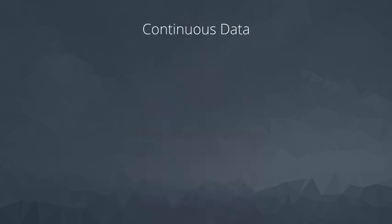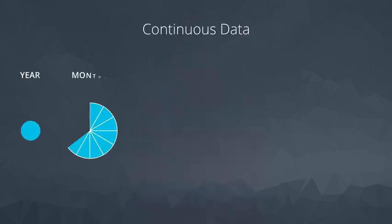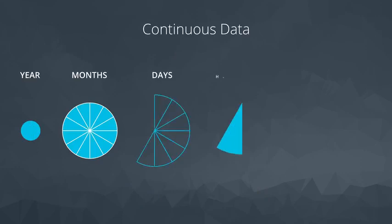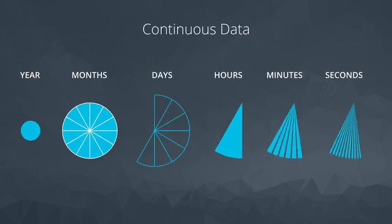For example, we could talk about age in terms of years, or months, or days, or hours, or minutes, or seconds, and still there are units that are smaller. This is true of continuous data. However, discrete data, like the number of dogs, only takes on countable values.